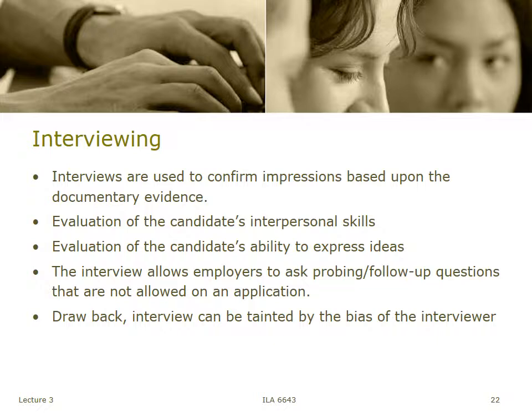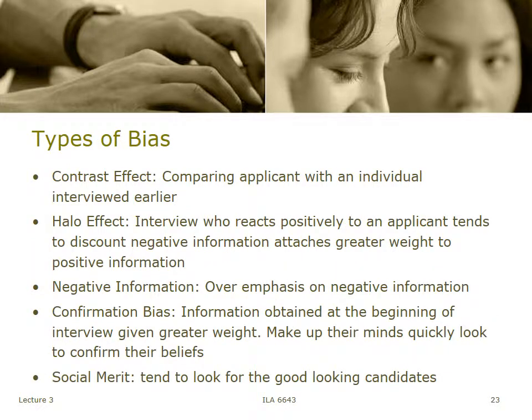Let's look at the types of biases. The first, and a very hard one to control for, is the contrast effect — this happens after interviewing several candidates when we compare the current candidate against those we've already interviewed. This is dangerous because one person may interview really well but not match the criteria. Remember: you're comparing them to the criteria, not to each other. That's also called the popularity contest bias — choosing the one we like most and who's most engaging, regardless of criteria.